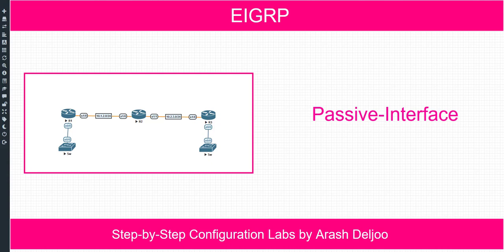In this video, I'm going to show you how to configure EIGRP passive interface. On interfaces where we don't expect to have any neighborship, we can enable EIGRP passive interface to reduce bandwidth usage on that link, CPU usage of the router, and other things explained in the EIGRP course. I configured a scenario with R1, R2, and R3 running EIGRP.